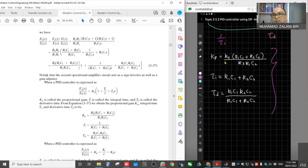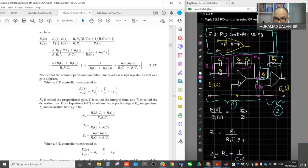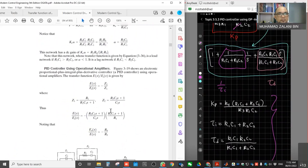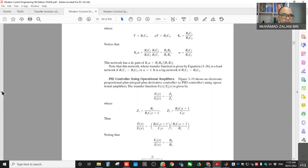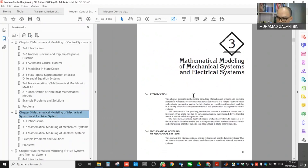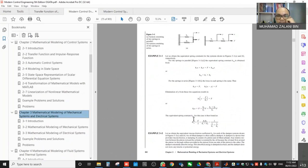Which is KP is R4(R1C1 plus R2C2) divided by R3R1C2, TI is R1C1R2C2 divided by (R1C1 plus R2C2), and TD is R1C1R2C2 divided by (R1C1 plus R2C2). If we're given all these values, we can estimate the gain. That's the explanation for PID controller using op-amp for 5.3, just a simple explanation.